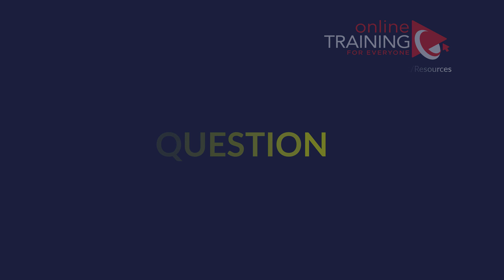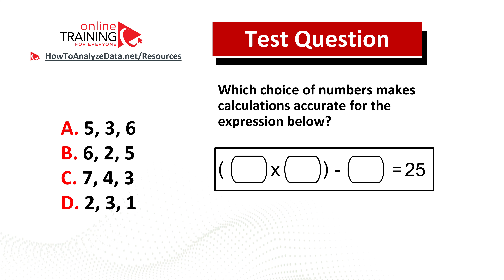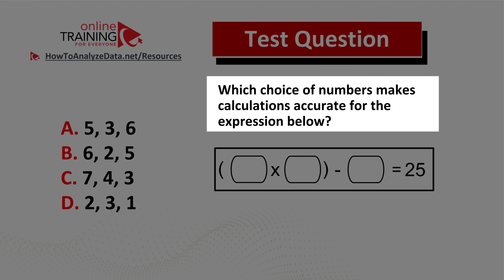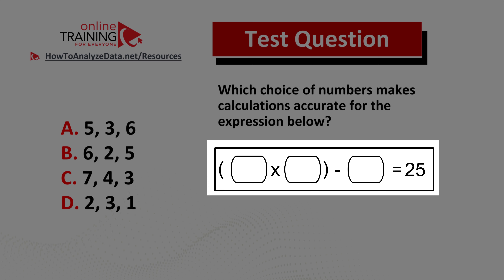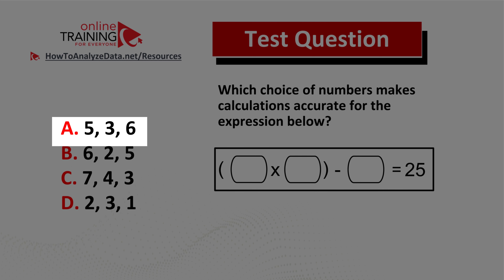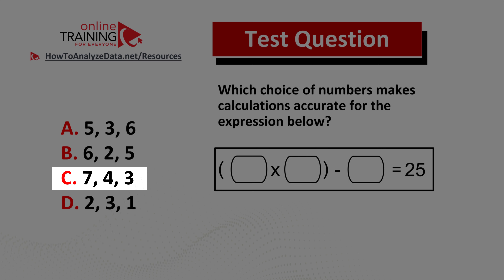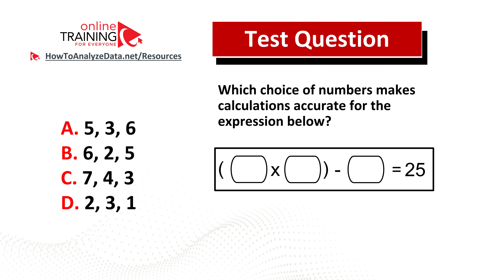Here is an interesting question which tests your knowledge and ability to do mental calculations. Which choice of numbers makes calculations accurate for the expression below? You are presented with an expression where two items in parentheses are multiplied, then a third number is subtracted, and the result equals 25. The four choices are: choice A: 5 3 6; choice B: 6 2 5; choice C: 7 4 3; and choice D: 2 3 1. You cannot use a calculator. Now might be a good time to pause this video.